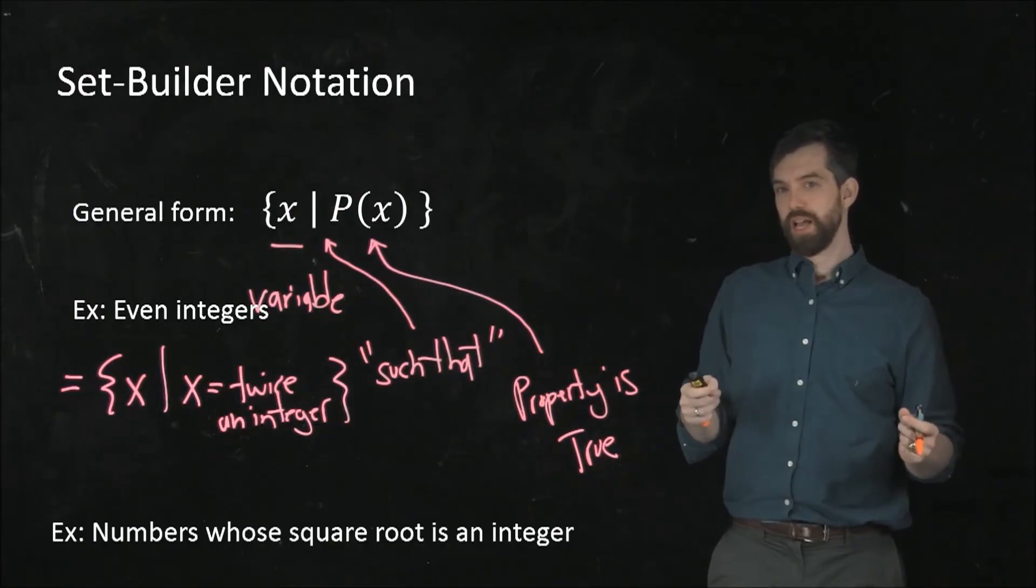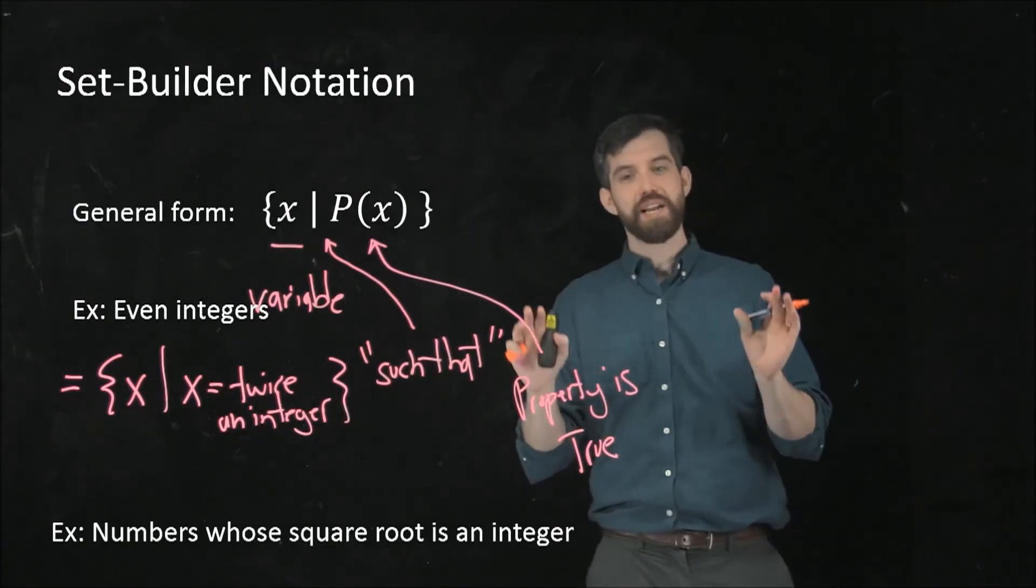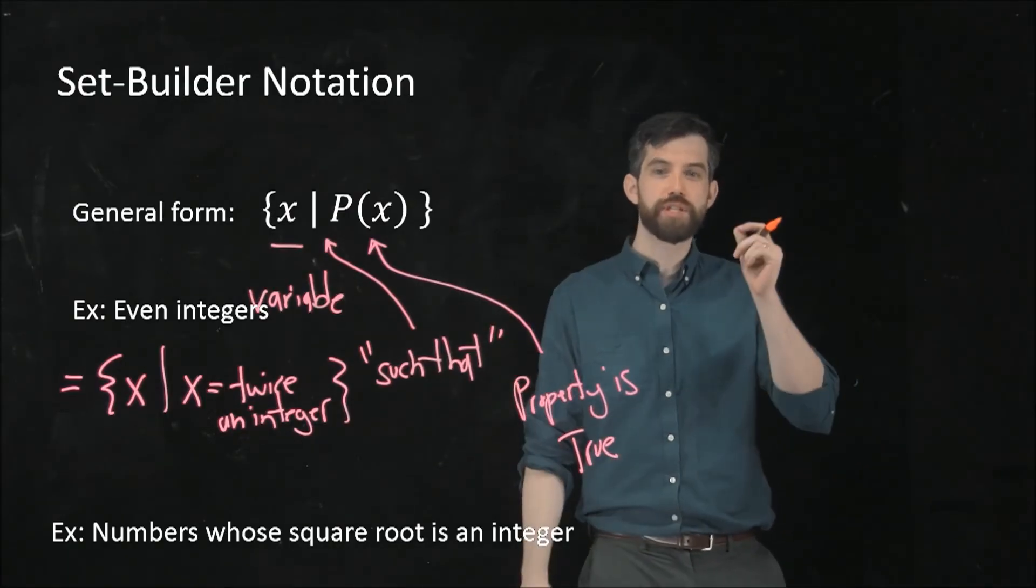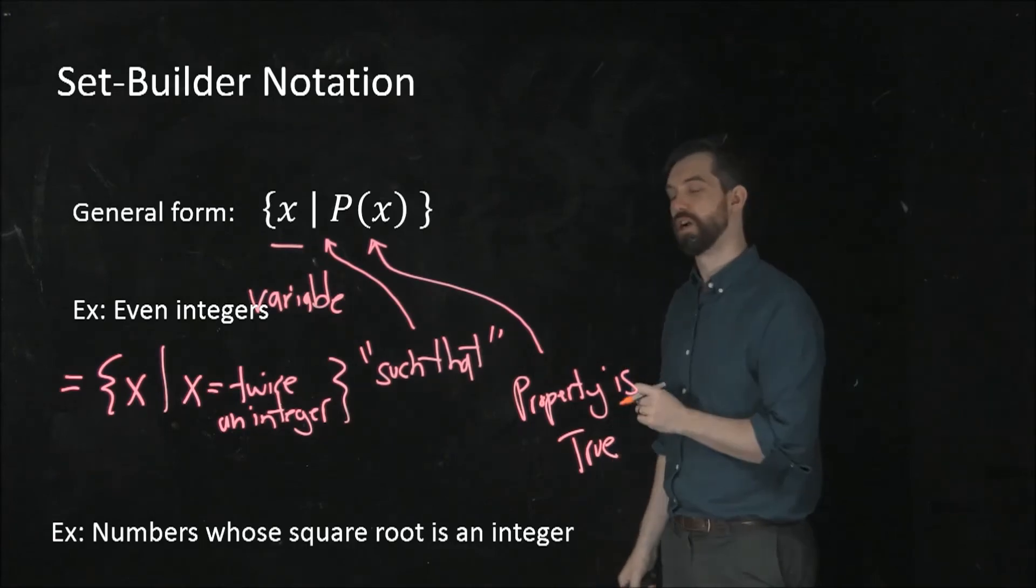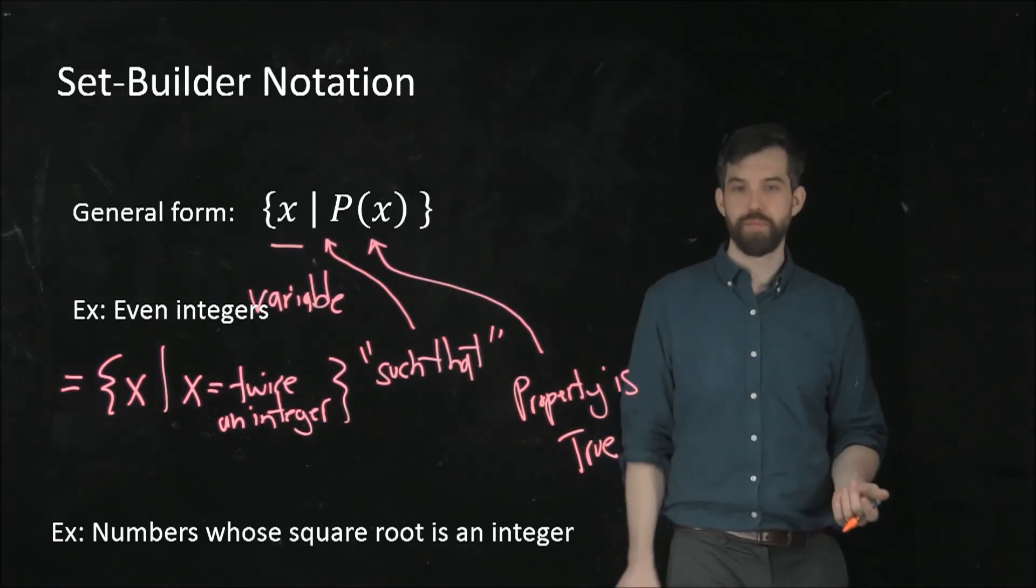All right. One more example. We're going to be looking at the set of numbers whose square root is an integer. So I have to try to figure out what this is going to be.